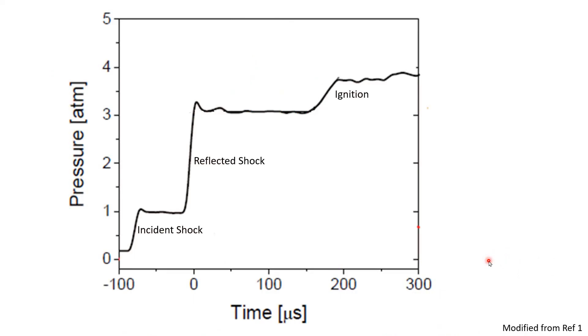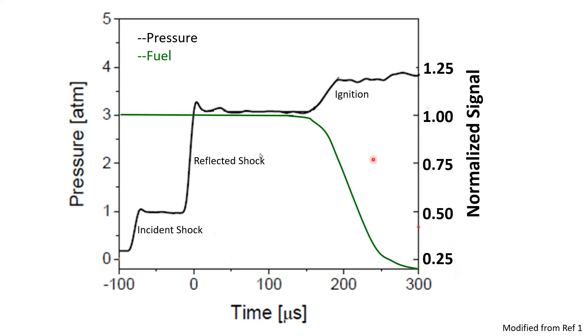So if we go back to the pressure trace that I showed earlier, and we add a right-hand side axis, just a normalized signal axis. We're going to use this to look at the histories of temperature OH and CH. And so each of those signals just comes in as a voltage to our data acquisition system. And so we can normalize that signal by its highest quantity. And so all of these will have a signal anywhere from 0 to 1. So if we look at fuel concentration first, we can see that fuel concentration starts out at its highest point. And then upon ignition, the fuel begins to be consumed until it goes down to 0.